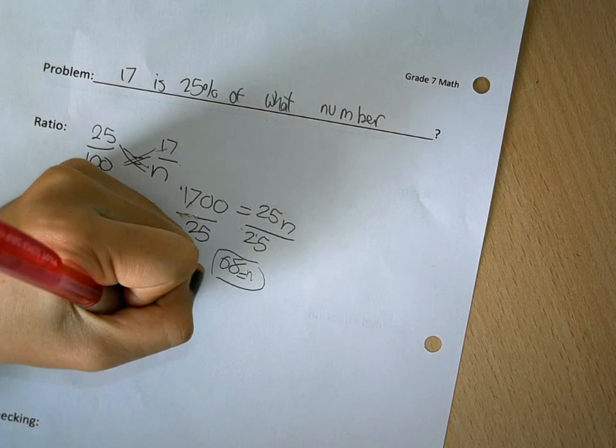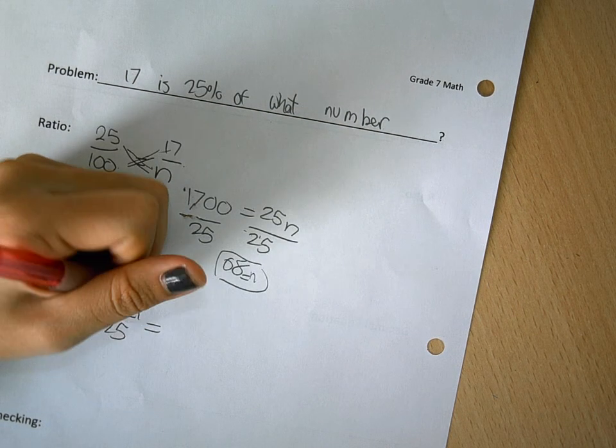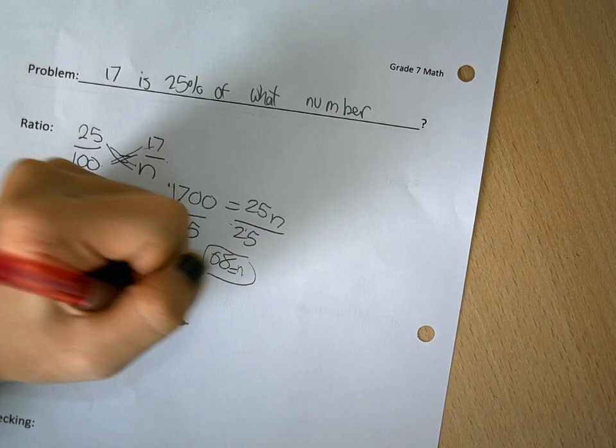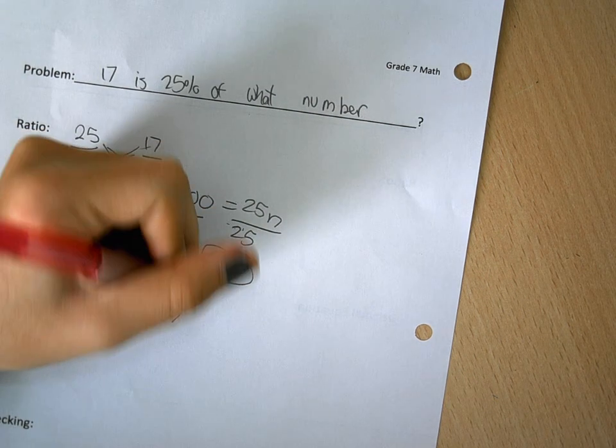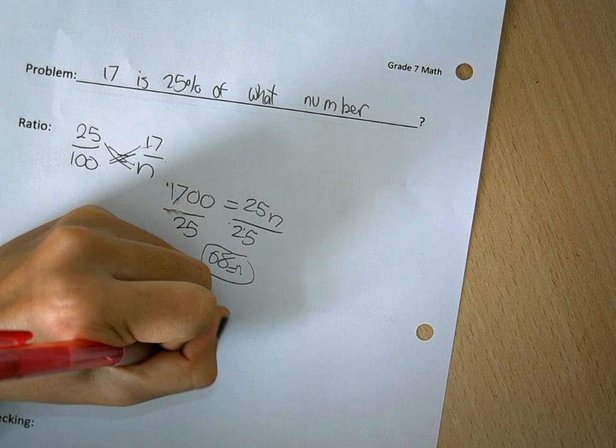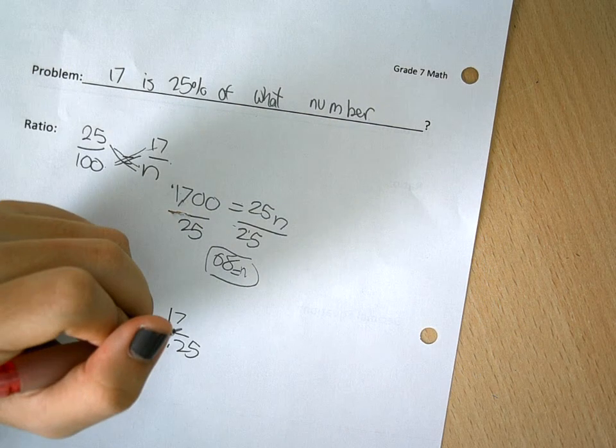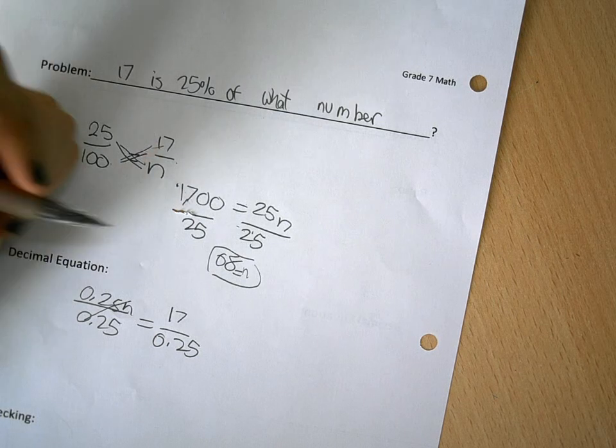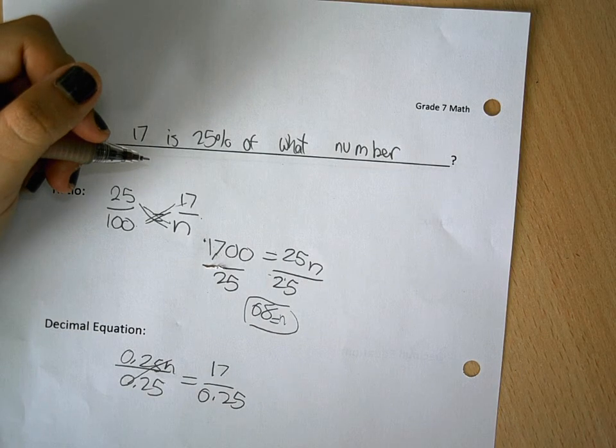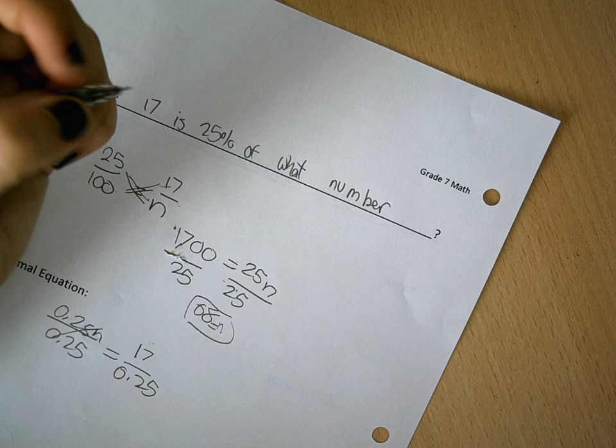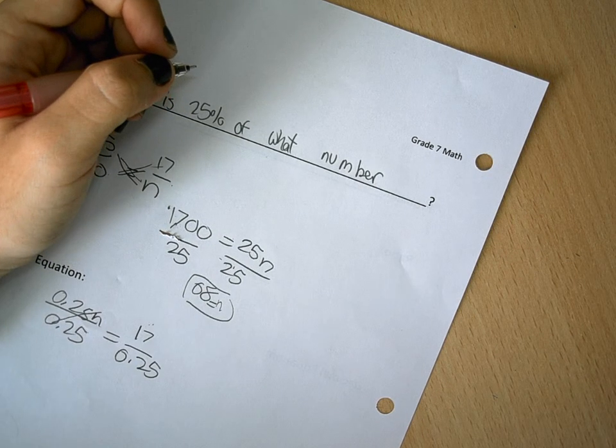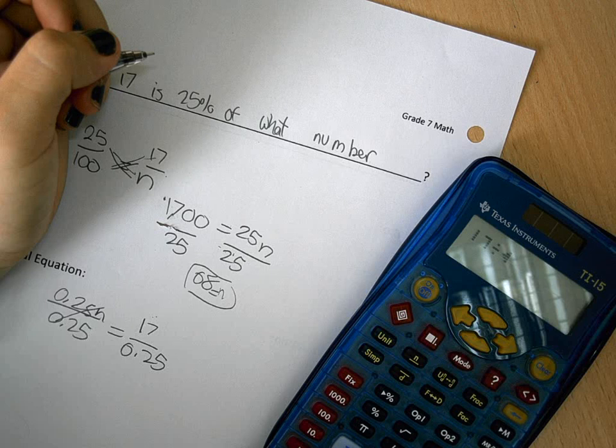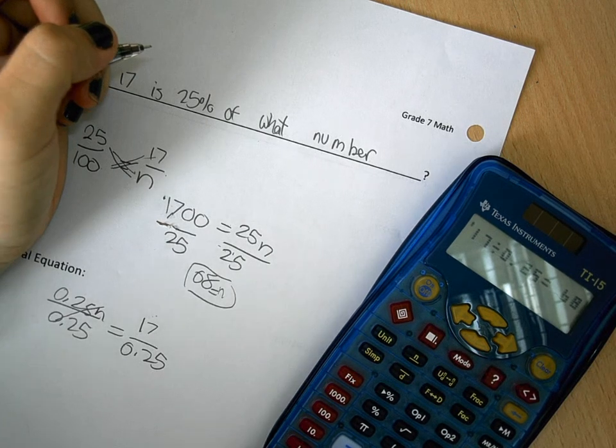And then you're going to take that, so this is already 1, so you don't need it. So it equals to 17 over 0.25, and then you're going to take 17 divided by 0.25, so 17 divided by 0.25 equals to 68.